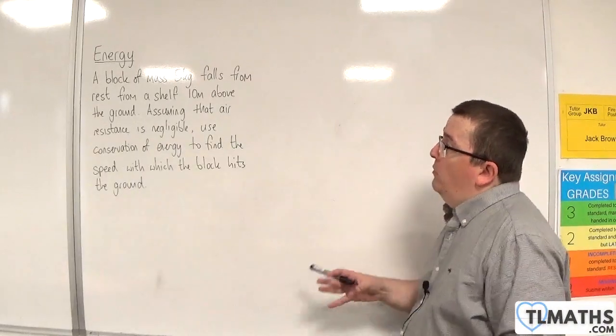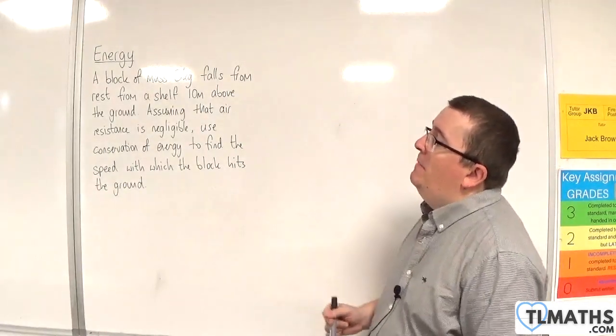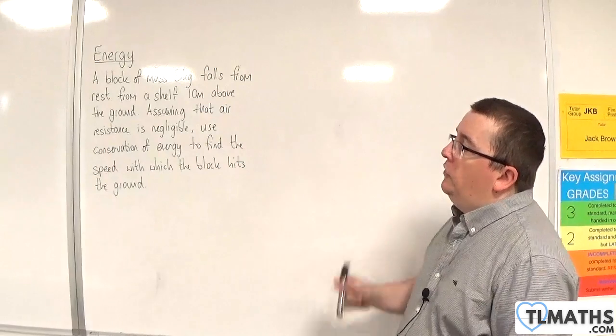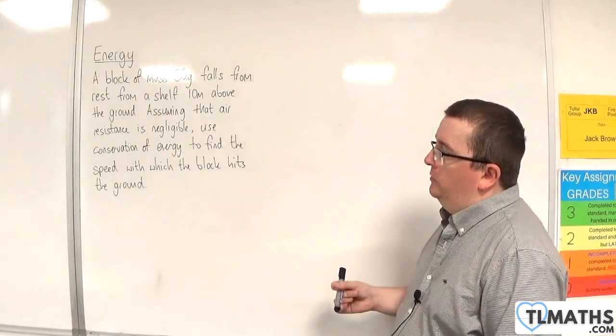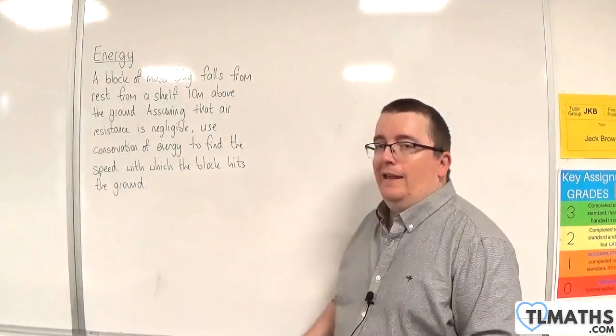So in this problem, we have a block of mass 5 kilos falls from rest from a shelf 10 metres above the ground. Assuming that air resistance is negligible, use conservation of energy to find the speed with which the block hits the ground.